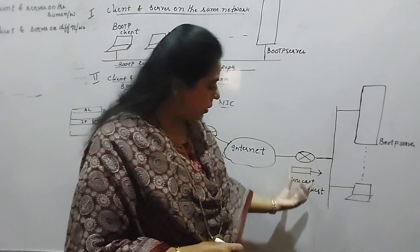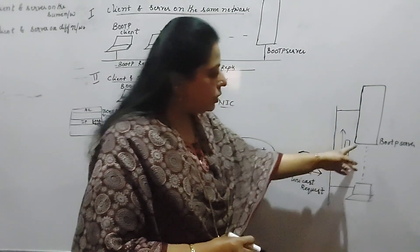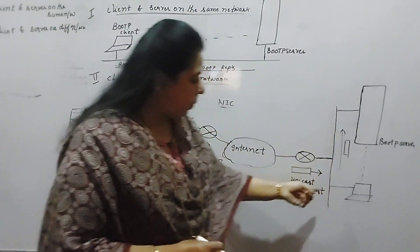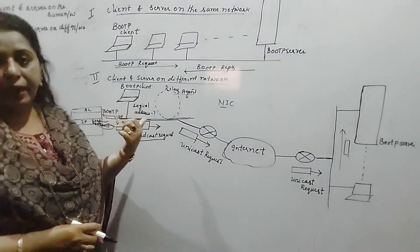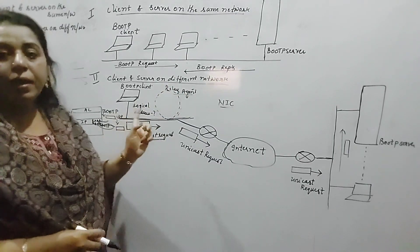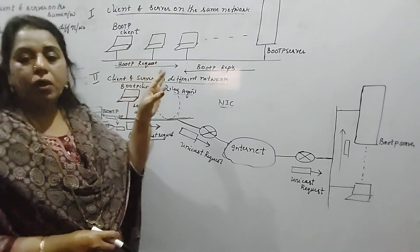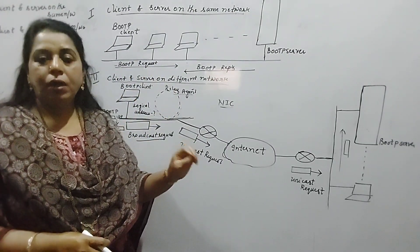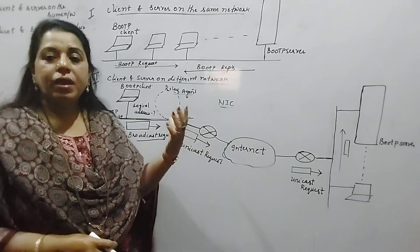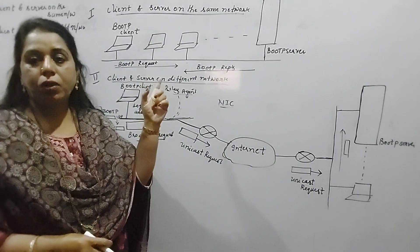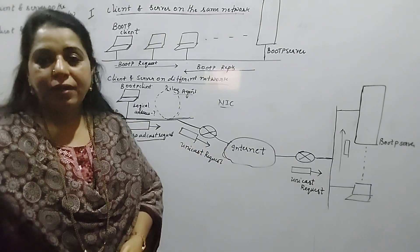The BOOTP server sends a reply which travels back via the same path and reaches the relay agent. The relay agent then sends the reply to the BOOTP client. The reply contains the logical address of the client machine. Whether in the same network or from another network, the source address field had all zeros and destination all ones in the request, but in the reply the client's logical address is provided. In future, this client will use that address to communicate with other nodes.